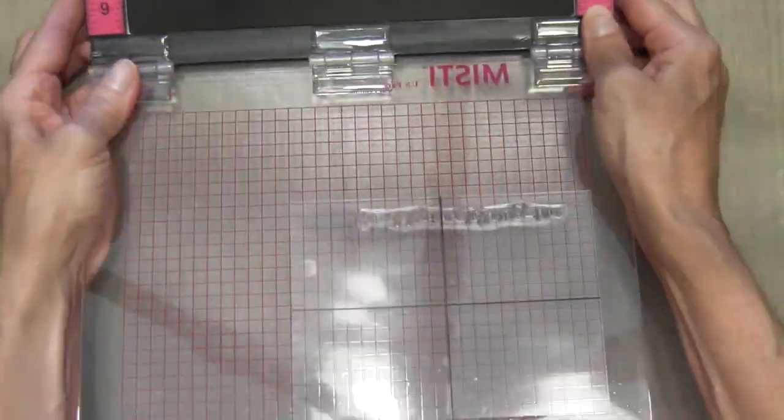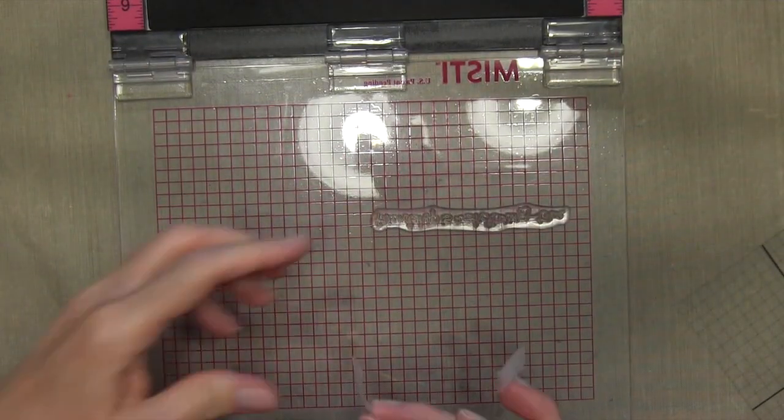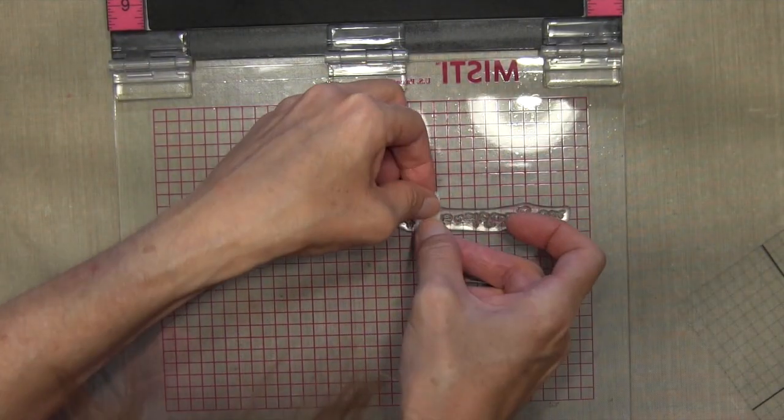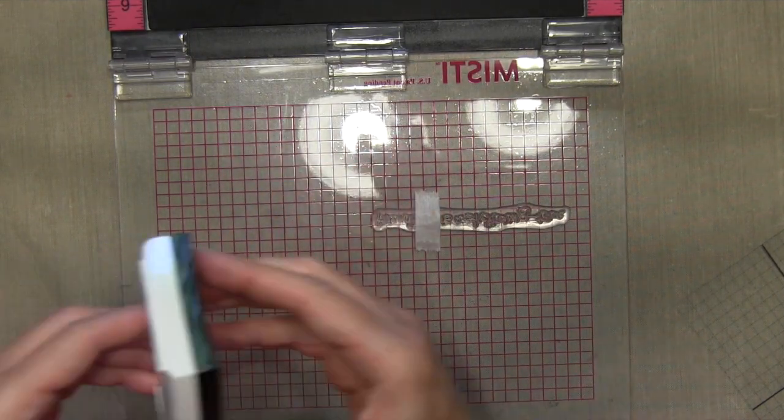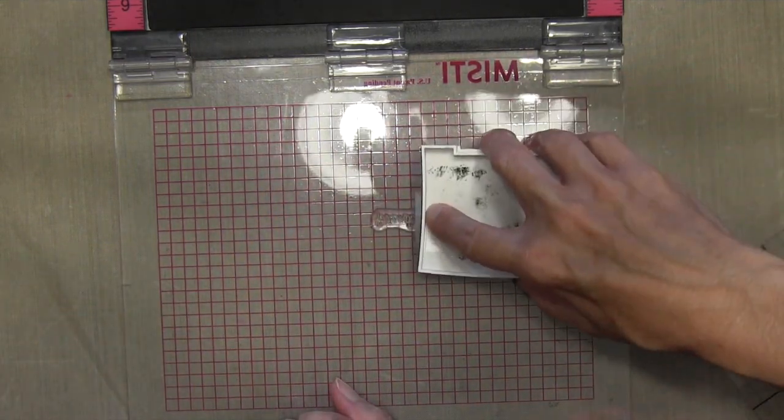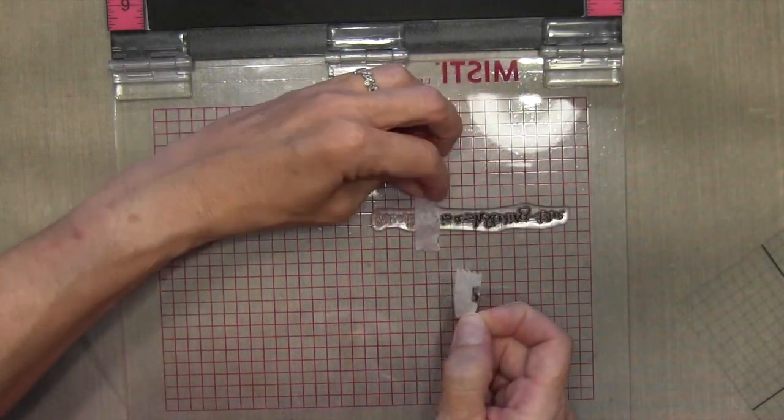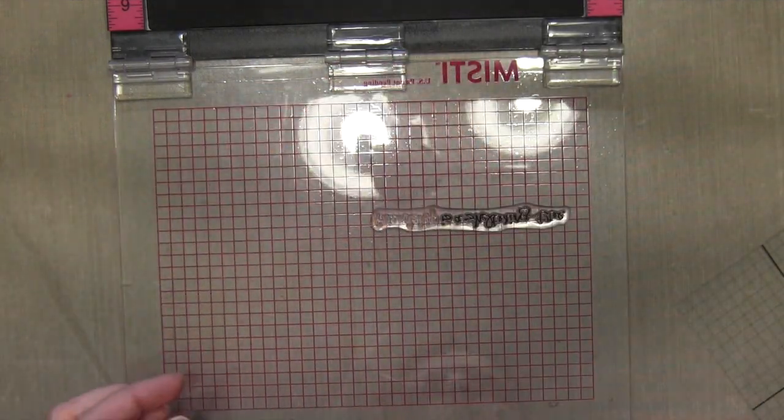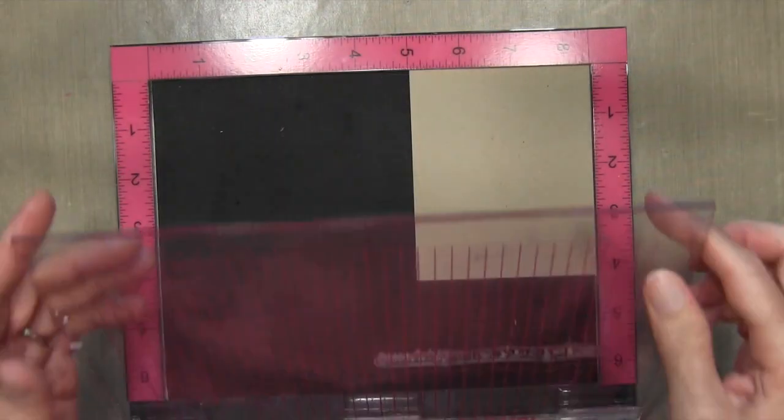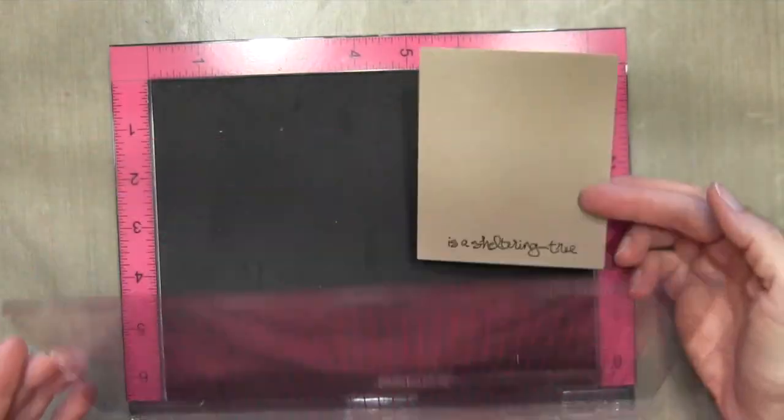So I'm gonna center it on the bottom. So I'm gonna do my sentiment first, but I'm only inking up part of it. So I'm gonna place some surgical tape over the border of where the end of mine is that I want. I'm gonna ink it up with some VersaFine Black Onyx ink. I'll remove my tape and then I'll stamp it right there on my cardstock. Now this is three and a half by four and a quarter.